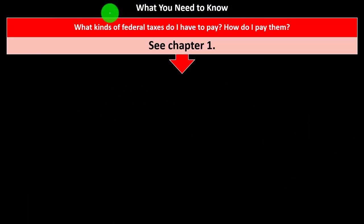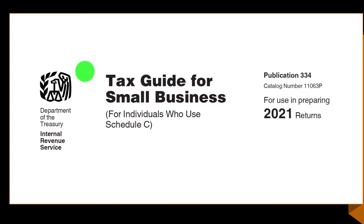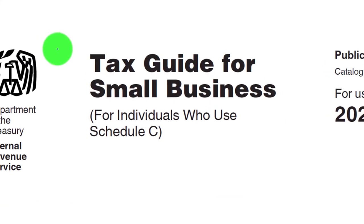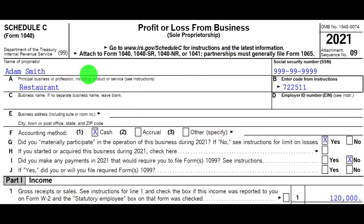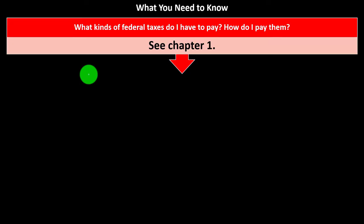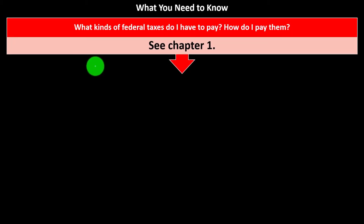There are just a couple of items you might want to keep in mind, referencing where you can find them in the Tax Guide for Small Businesses. We'll touch on more as we go through our presentations. So, what kinds of federal taxes do I have to pay? The first one to think about is federal income taxes.